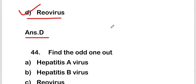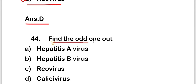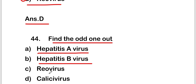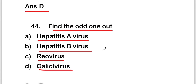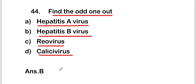The next question is: find out the odd one out. Options are hepatitis A virus, hepatitis B virus, rheovirus, or calcivirus. The right answer is option B, that is hepatitis B virus. This is the odd one among these four options.